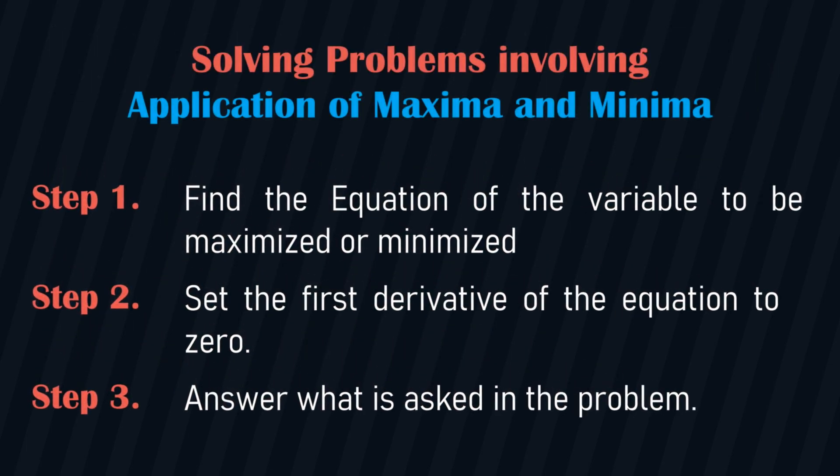To recap, these are the steps in solving problems involving maxima and minima: Step number one, find the equation. Step number two, set the first derivative to zero. Step number three, answer what is asked in the problem.